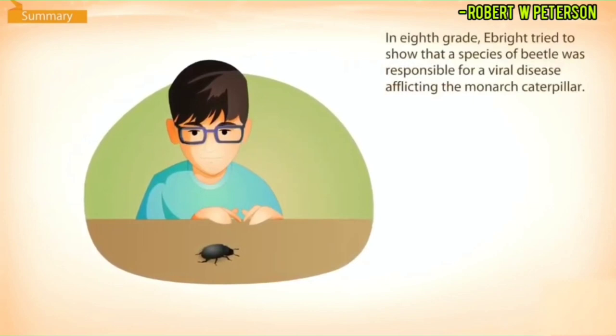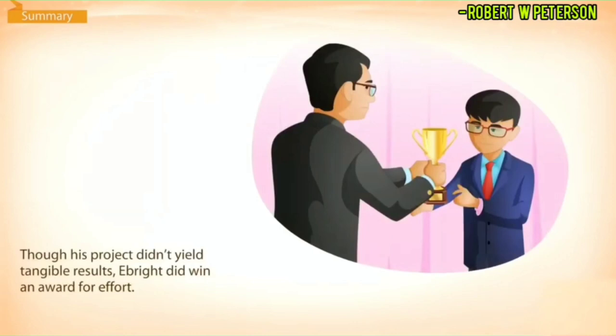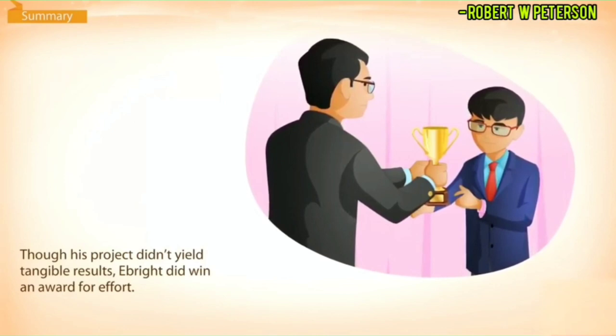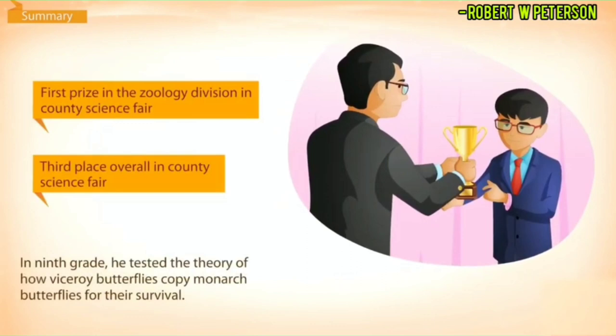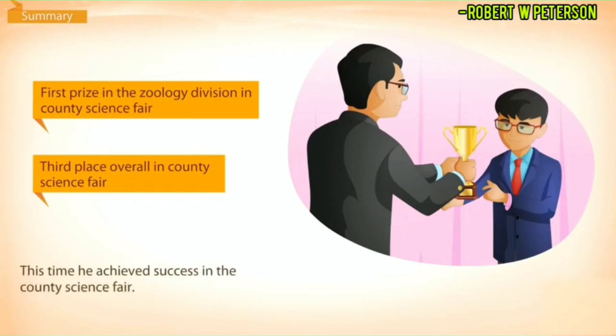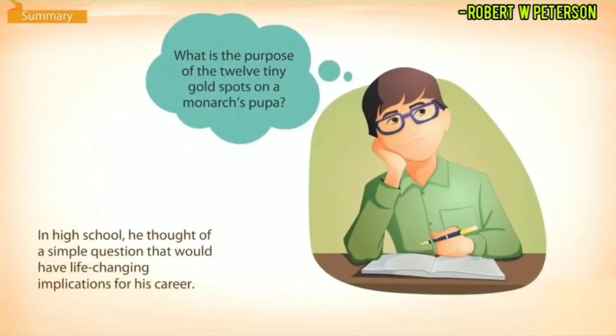In eighth grade, Ebright tried to show that a species of beetle was responsible for a viral disease afflicting the monarch caterpillar. Though his project didn't yield tangible results, Ebright did win an award for his efforts. In ninth grade, he tested the theory of how Viceroy butterflies copy monarch butterflies for their survival, and this time he achieved success in the county science fair.